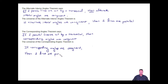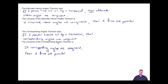So if we can show that same side interior angles add up to 180, or if we can show that alternate interior angles or corresponding angles are equal in measure, then we can prove that two lines must be parallel.